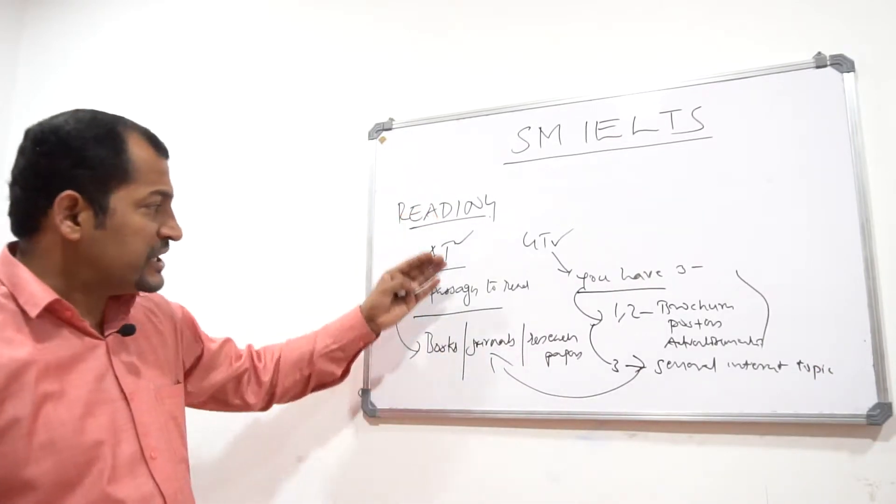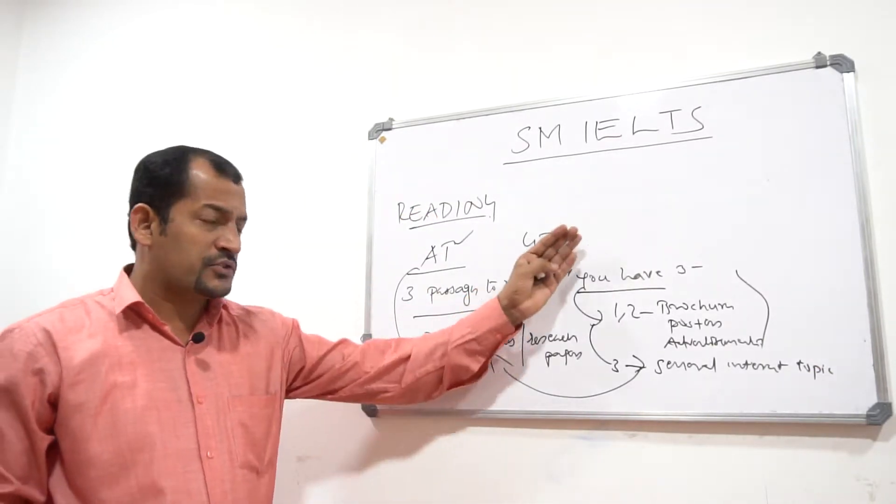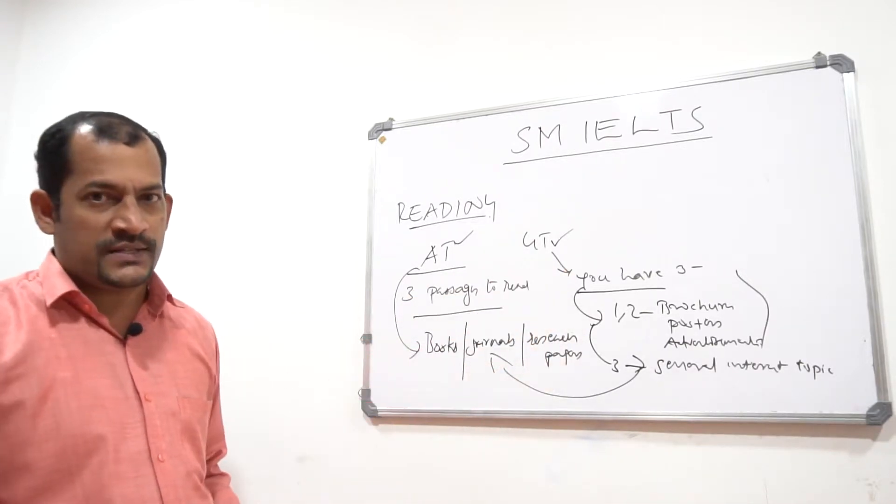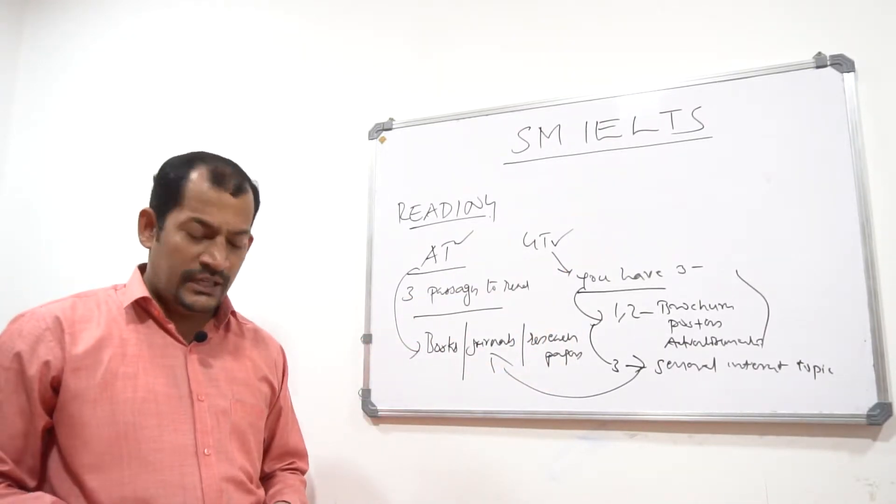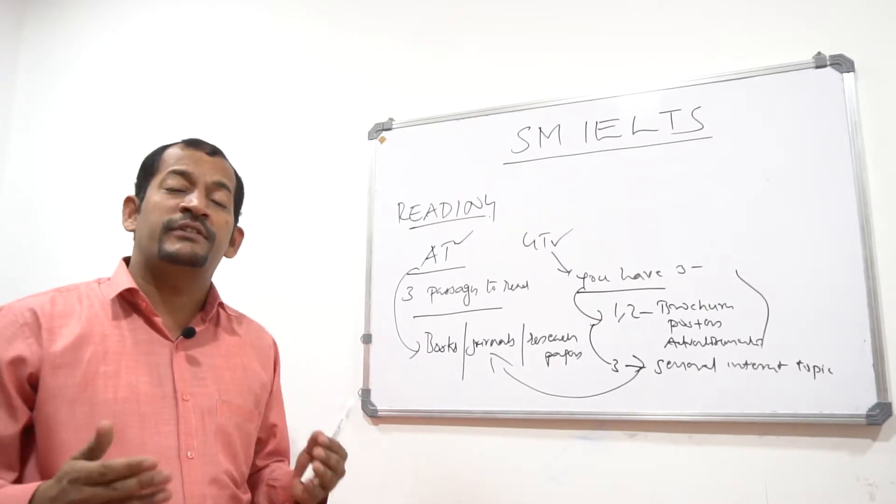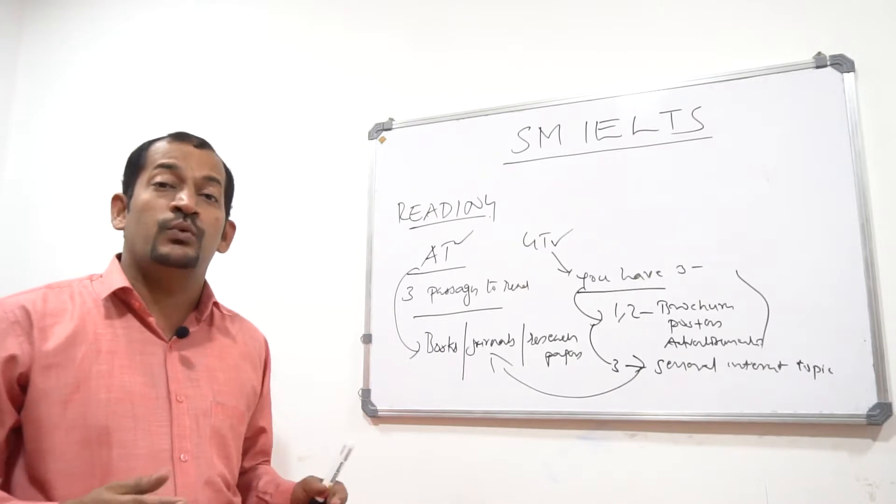Anyhow, you have three passages for AT and three passages for GT. At the end of each passage, you will have some questions. Questions are of different types. In IELTS reading, you have 14 different types of questions. Let me tell you what those questions are.